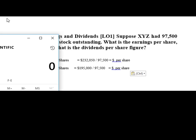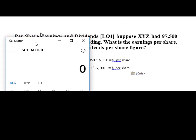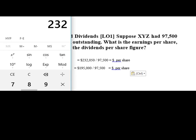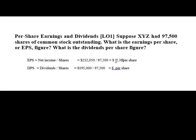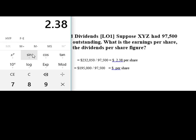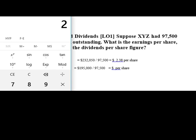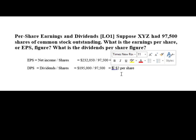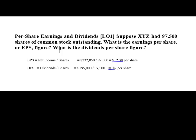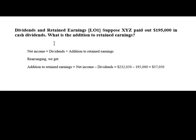Let's take the calculator out. We're going to say 232,050 divided by 97,500, which equals $2.38 per share for EPS. Then for dividends per share, we take 195,000 and divide that by 97,500, and our dividends per share rounds out to $2.00 per share. Those are the solutions to the per share earnings and dividends, as well as the cash and retained earnings we did before.